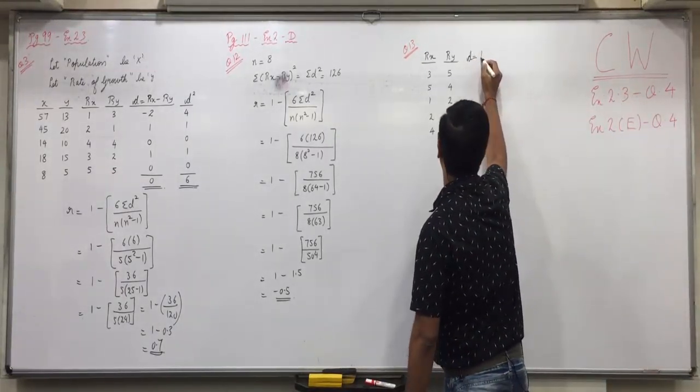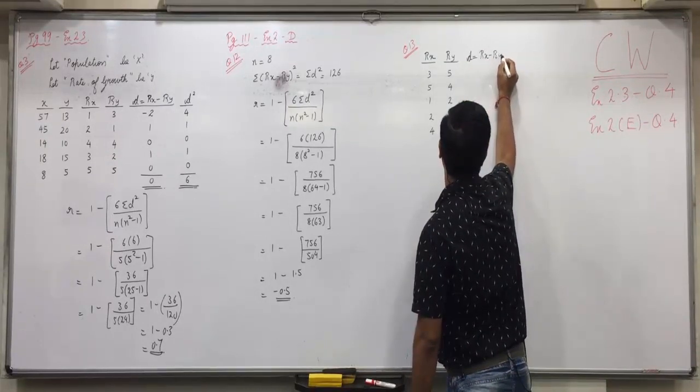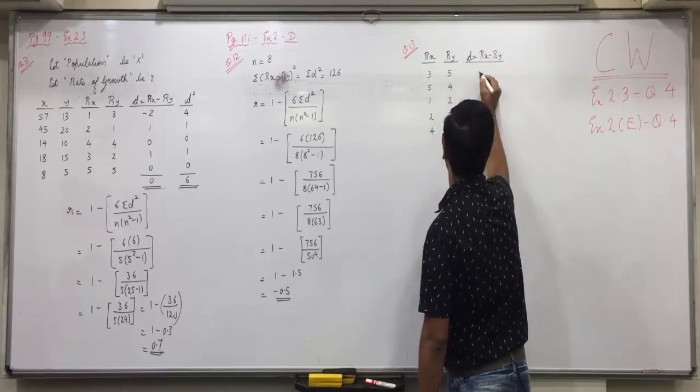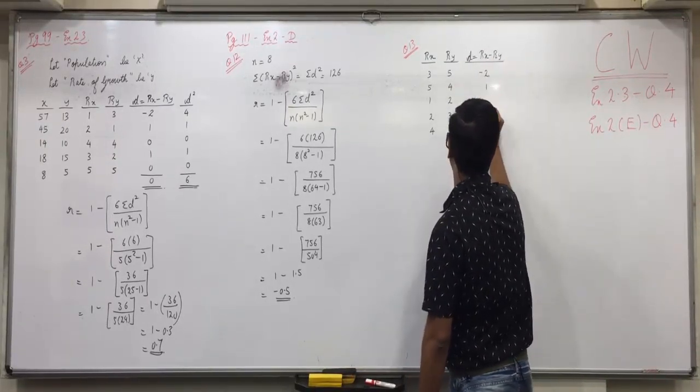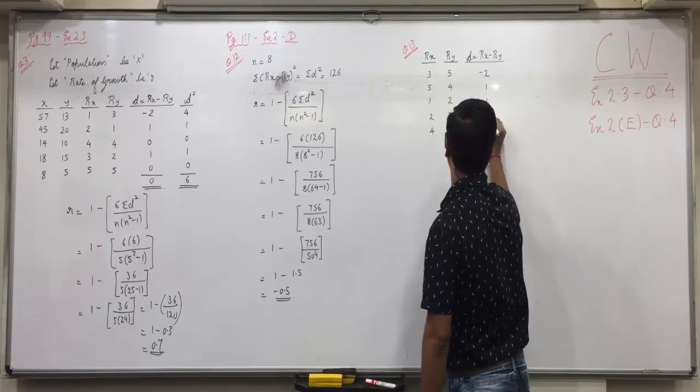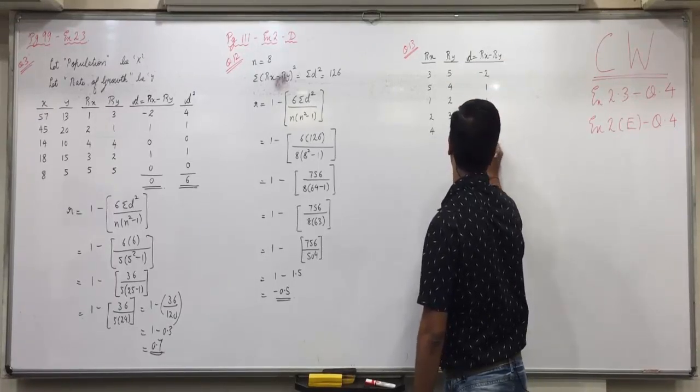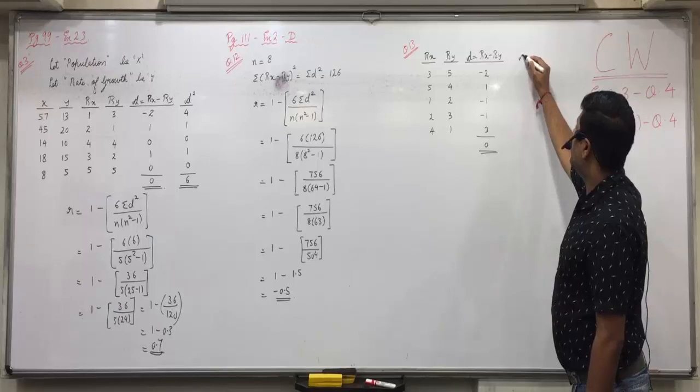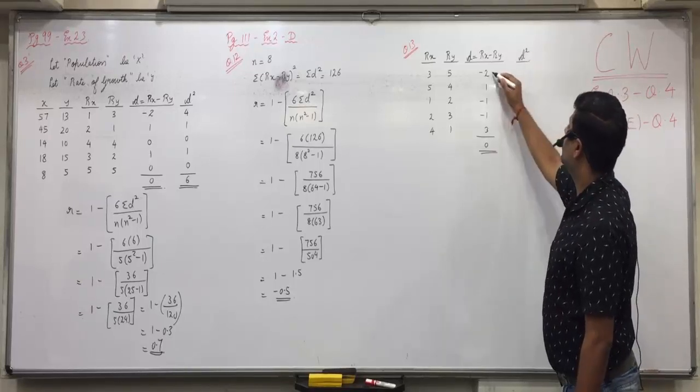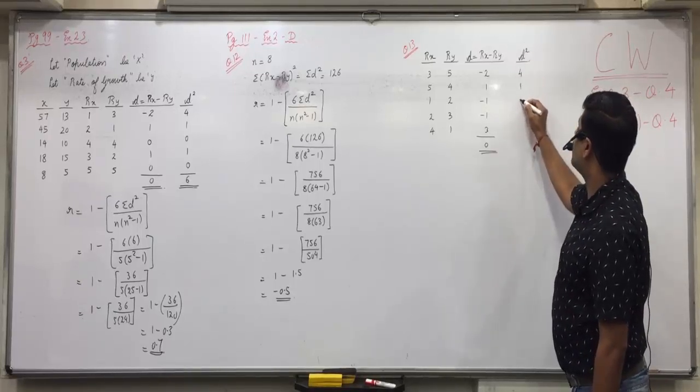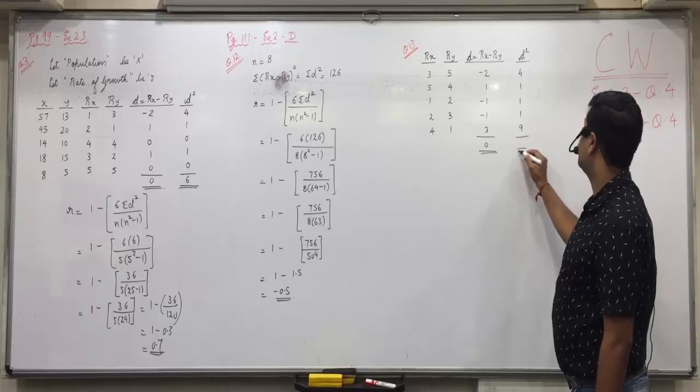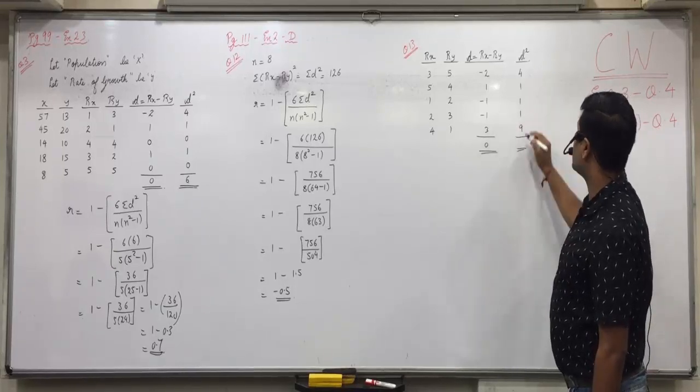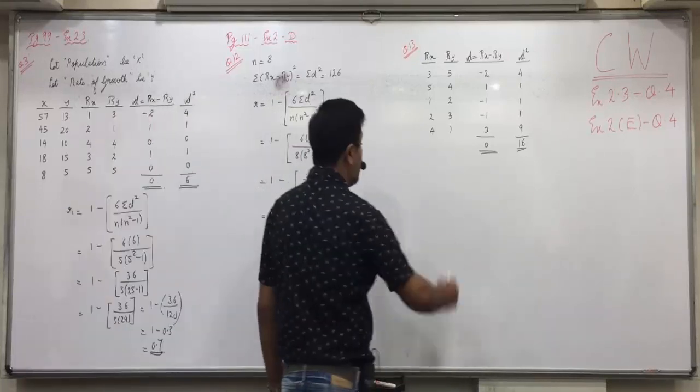Further we have to proceed with D. That is Rx minus Ry: 3 minus 5, 5 minus 4, 1 minus 2, 2 minus 3 and 4 minus 1. Positive is 4, negative is also 4. Further we require D square. So, minus 2 square is 4, 1 square is 1, 1, 1 and 3 square is 9. So 9, 10, 11, 12, 16.